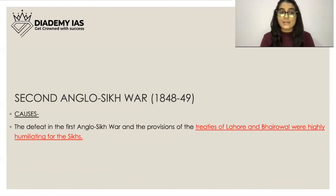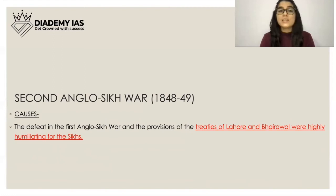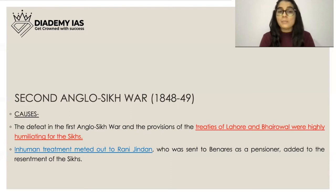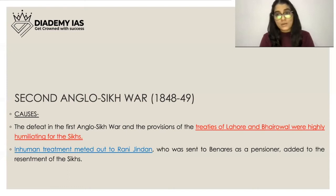Now, the Second Anglo-Sikh War, from 1848 to 1849. The causes were: first, the defeat in the First Anglo-Sikh War and the humiliating provisions of the Treaties of Lahore and Bhairowal; second, the inhumane treatment of Rani Jindan, who was sent to Banaras as a pensioner, added to the resentment of the Sikhs.